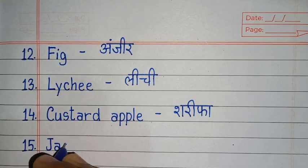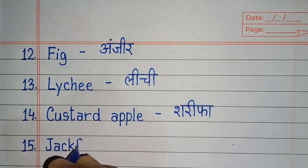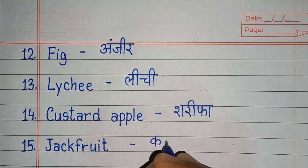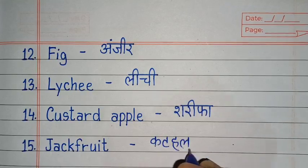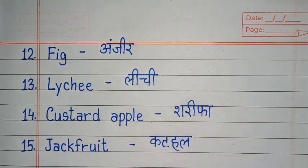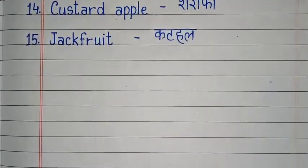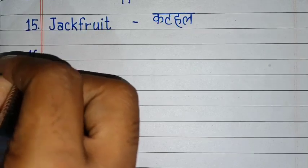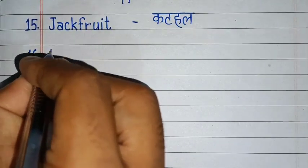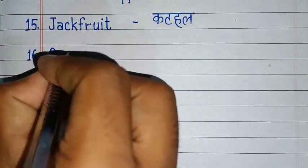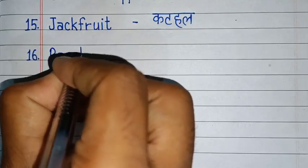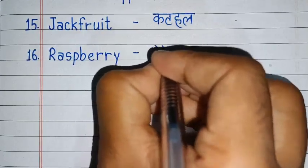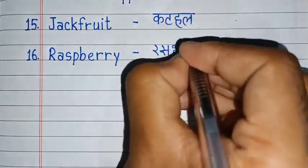J, A, C, K, F, R, U, I, T. Jackfruit. Jackfruit means kathal. R, A, S, P, B, E, R, R, Y. Raspberry. Raspberry means raspberry.